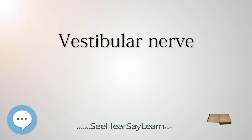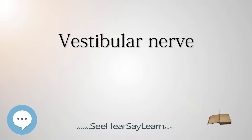The vestibular nerve is one of the two branches of the vestibulocochlear nerve, the cochlear nerve being the other. In humans, the vestibular nerve transmits sensory information transmitted by vestibular hair cells located in the two otolith organs, the utricle and the saccule, and the three semicircular canals via the vestibular ganglion.